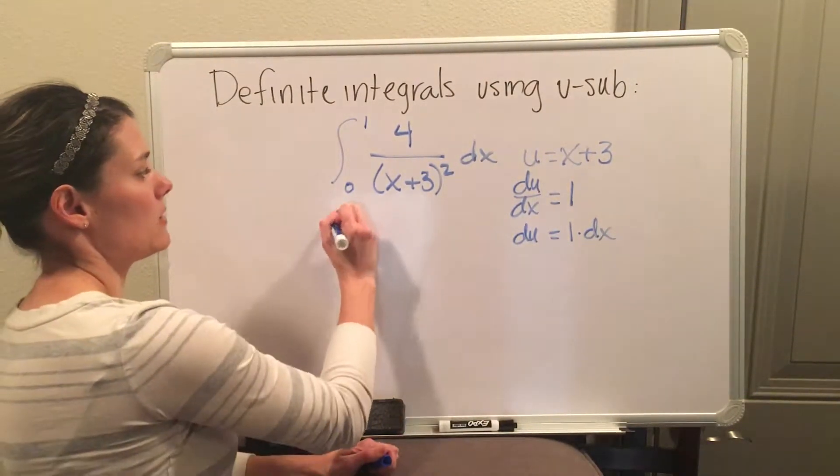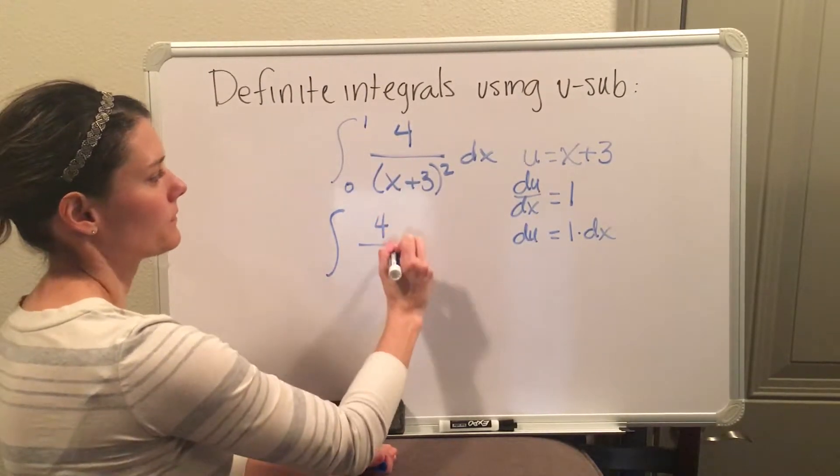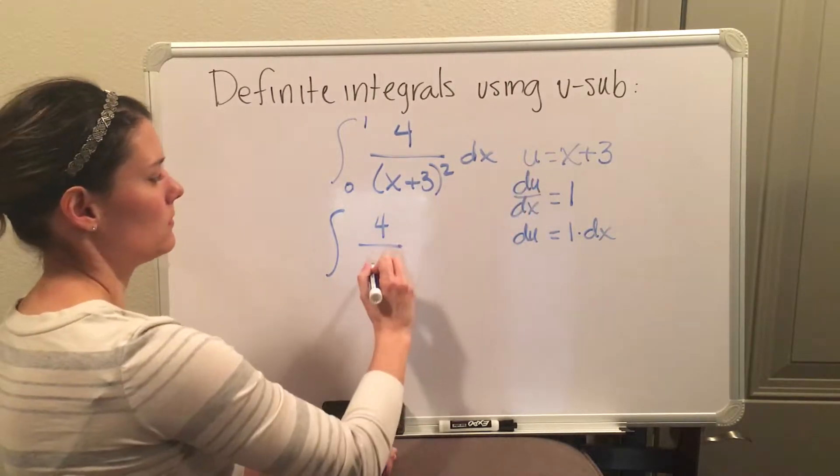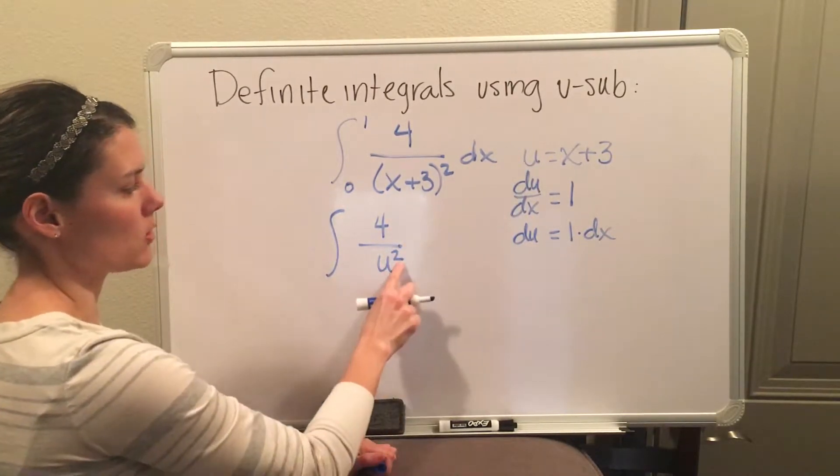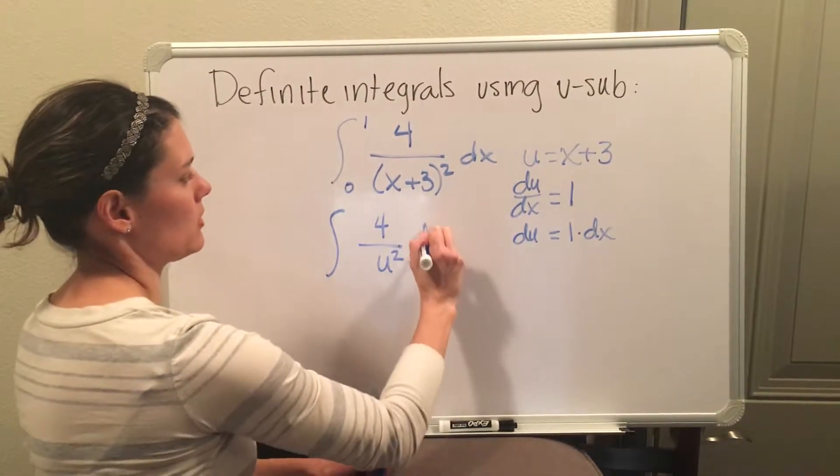And what I'm going to do next is I'm going to substitute everything in terms of u. So the 4 will stay, x plus 3 is now u, so that's u squared now, and dx is now equal to du, so I'm going to change that as well.